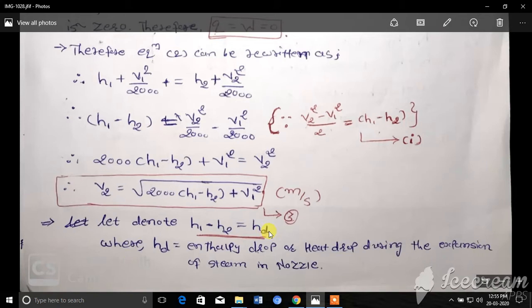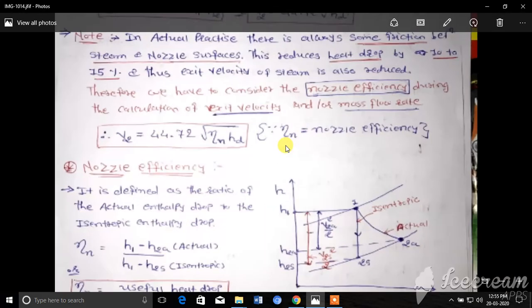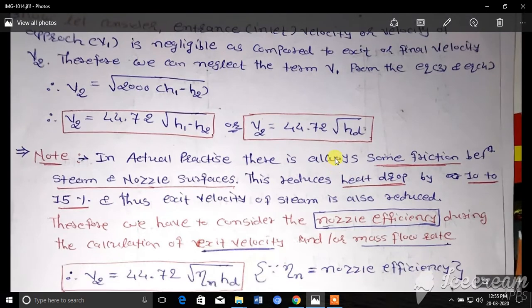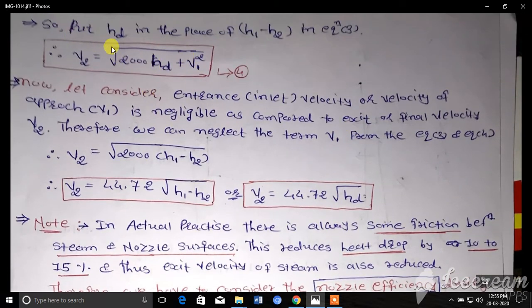Let's denote H1 minus H2 equals HD, where HD is the enthalpy drop or heat drop during the expansion of steam in a nozzle. Put this HD in place of H1 minus H2 in equation 3. We will get V2 equals square root of 2000 HD plus V1 squared. This is equation number 4.